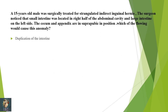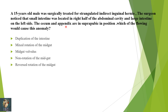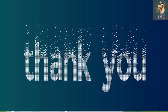A 15-year-old male was surgically treated for strangulated indirect inguinal hernia. The surgeon noticed the small intestine was in the right half of the abdominal cavity, large intestine on the left, and cecum and appendix in the suprapubic position. Which anomaly causes this — duplication of intestine, mixed rotation, midgut volvulus, non-rotation, or reversed rotation? This is non-rotation of the midgut which leads to all these anomalies. This is end of the lecture.